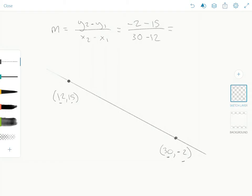And then subtraction. This right here gives negative 17. This right here gives 18.